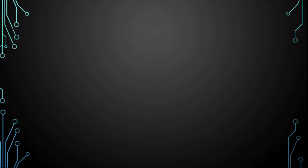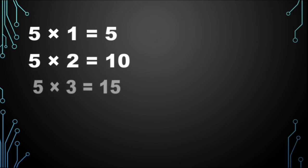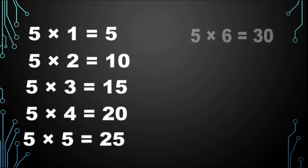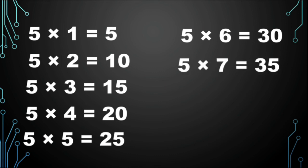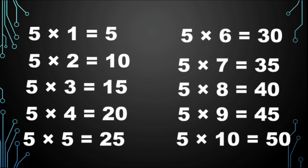Let's learn the table of 5 one more time. 5 1s are 5, 5 2s are 10, 5 3s are 15, 5 4s are 20, 5 5s are 25, 5 6s are 30, 5 7s are 35, 5 8s are 40, 5 9s are 45, 5 10s are 50.